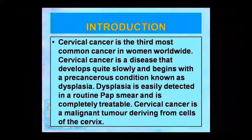Cervical cancer is a disease which starts very slowly. It starts with a pre-cancerous condition which is dysplasia. The cervix first develops dysplasia, and dysplasia slowly develops into cervical cancer. If detected early, it can be treated. Dysplasia means immature cell growth.